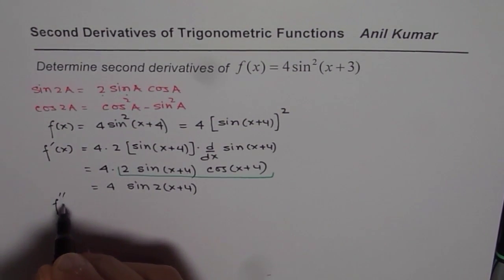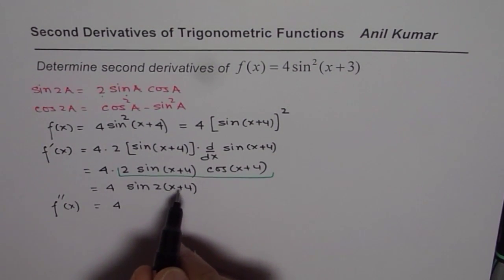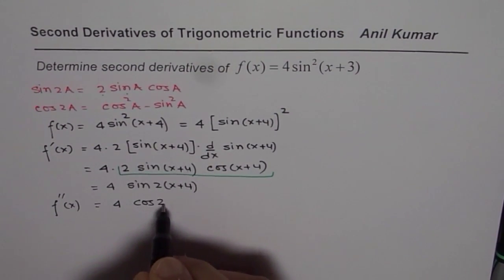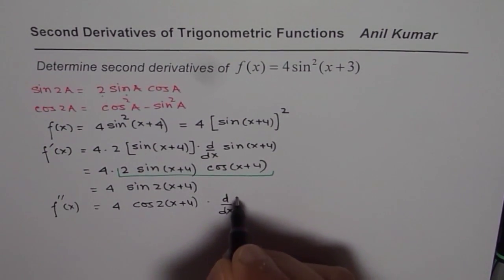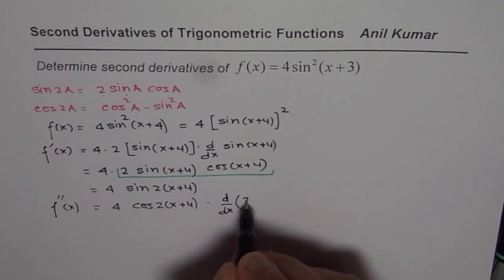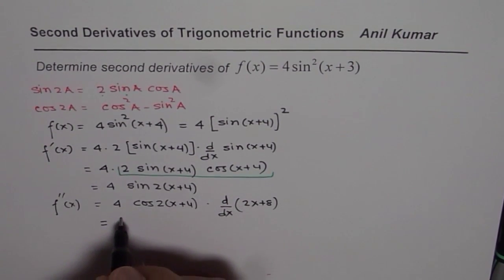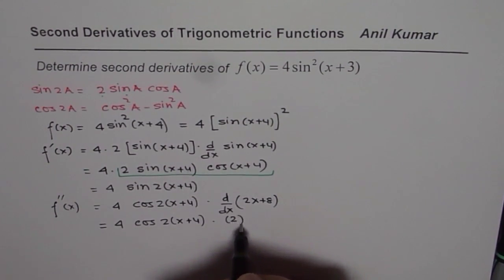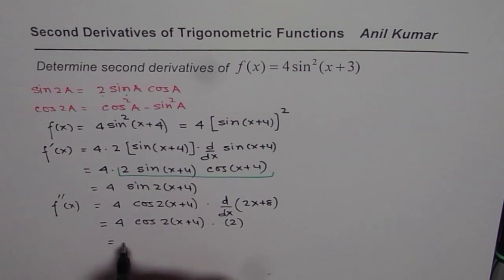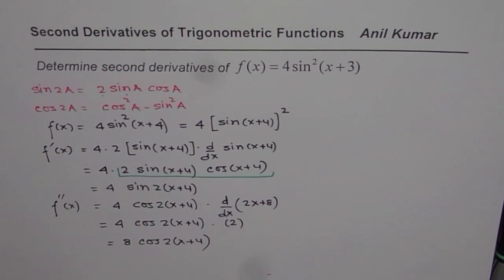The second derivative will be the derivative of this function, which is 4 times the derivative of sine of 2 times x plus 4. That gives cos of 2 times x plus 4, times the derivative of the inside function. The inside function is 2x plus 8, so its derivative is 2. Therefore we get 4 times cos of 2 times x plus 4 times 2, which equals 8 cos of 2 times x plus 4. That is the final answer.